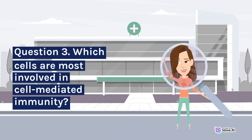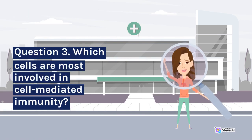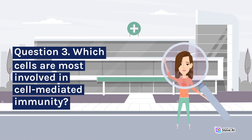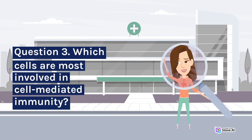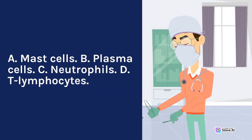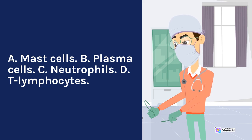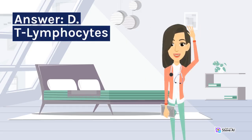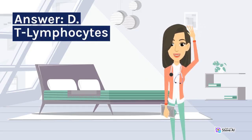Question 3. Which cells are most involved in cell-mediated immunity? A. Mast cells. B. Plasma cells. C. Neutrophils. D. T-lymphocytes. Answer: D. T-lymphocytes.